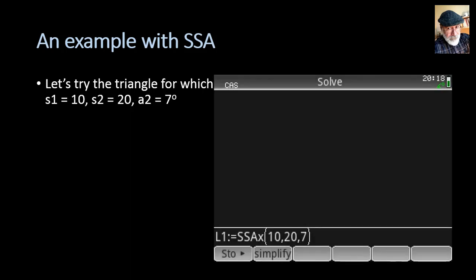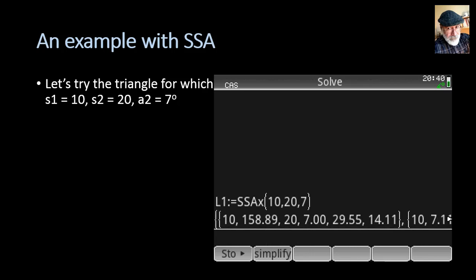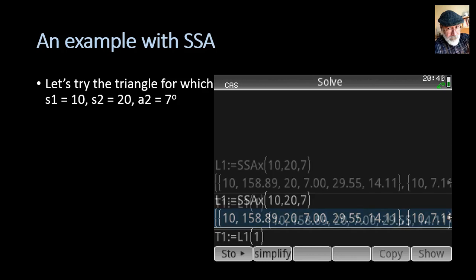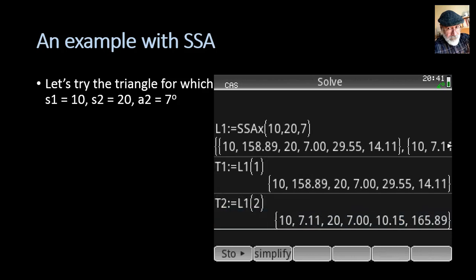So, we call SSA. We enter the sides 10, 20, and 7 degrees, and we collect the results in the list variable L1. What is that? That is two triangle solutions. We can extract each one of them as a separate sub-list this way. T1 will be the first element of L1. That's going to be the first list. And T2, I will collect the second element of L1, which is the second solution.